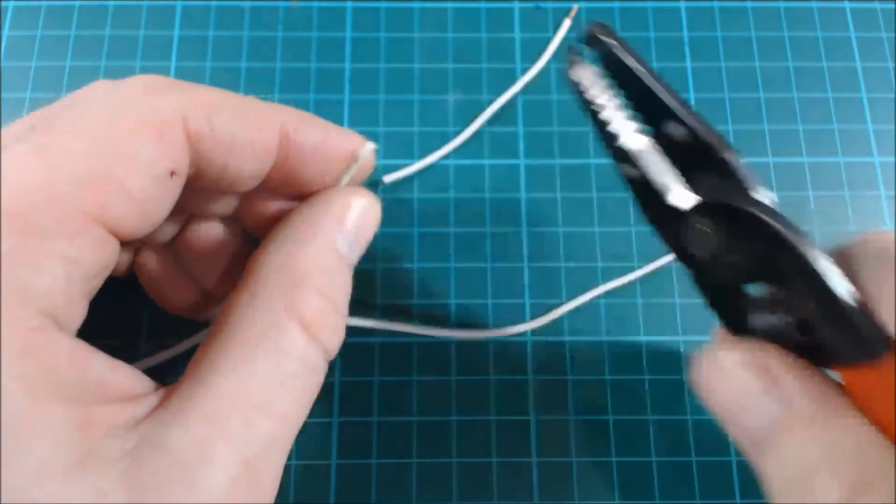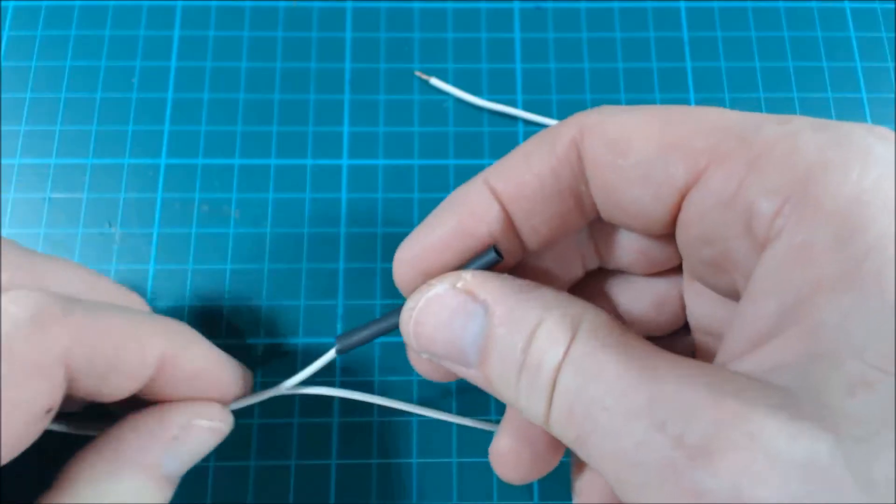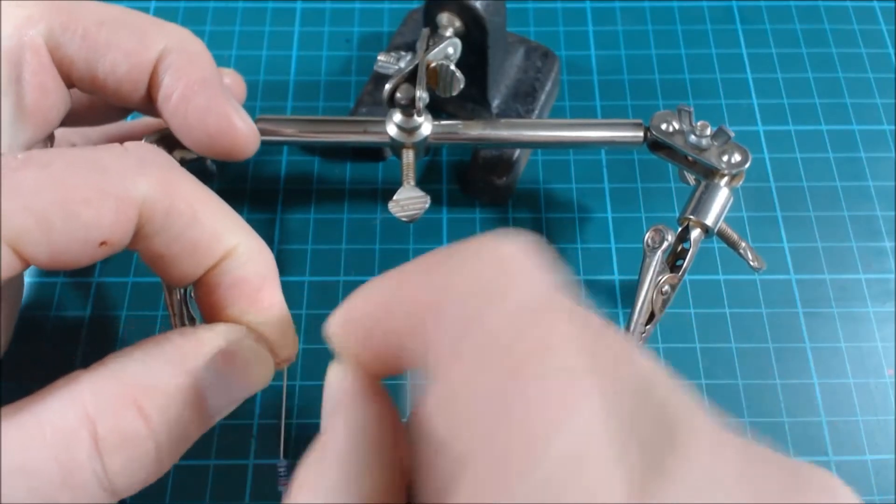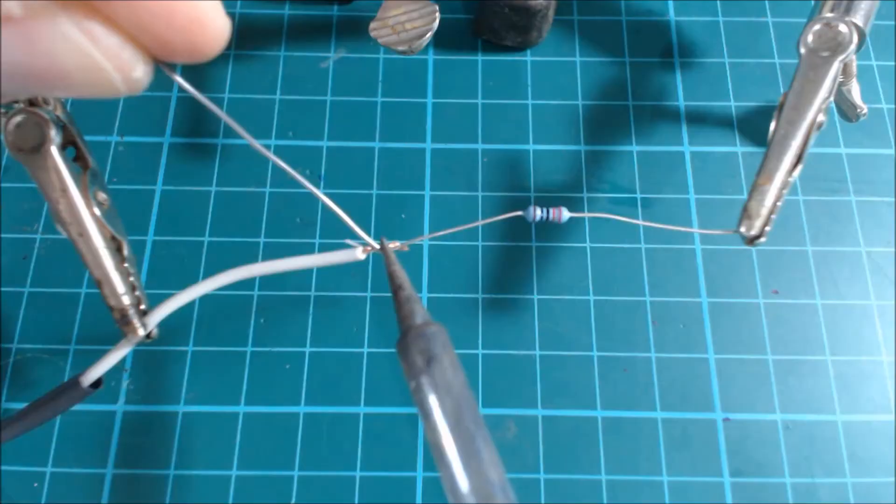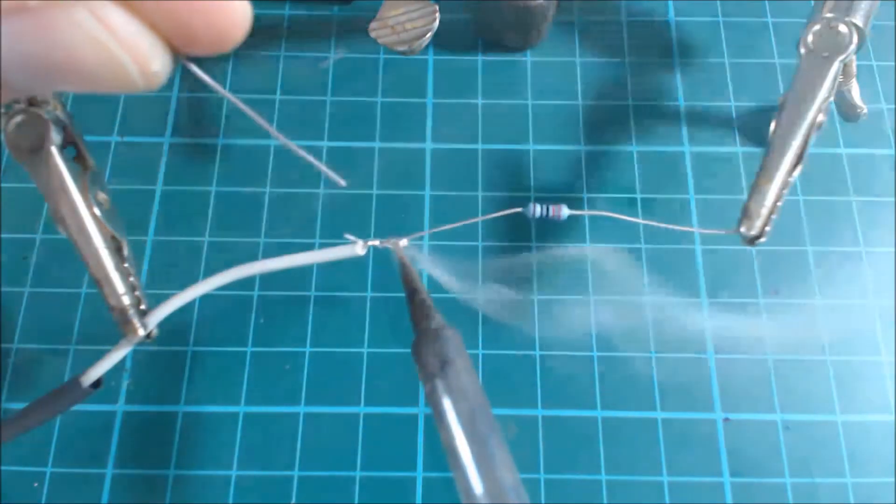So first of all we need to install the resistor in the positive lead from the lamp. That's the one without a black stripe. The way I did that was to cut the plain wire, solder the resistor in place, and cover the connections with heat shrink tubing.